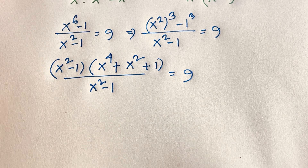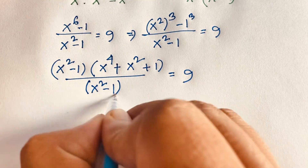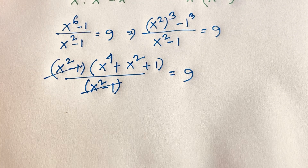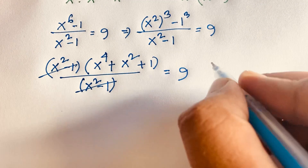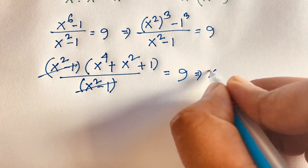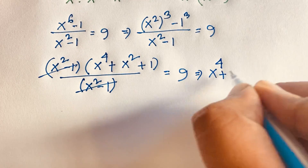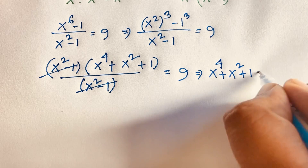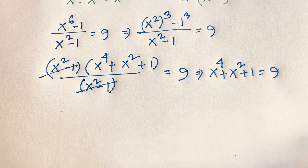If we cancel the (x squared minus 1) factor from numerator and denominator, we can see easily this simplifies. We find that x to the power 4 plus x to the power 2 plus 1 is equal to 9.